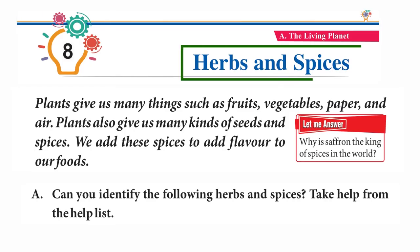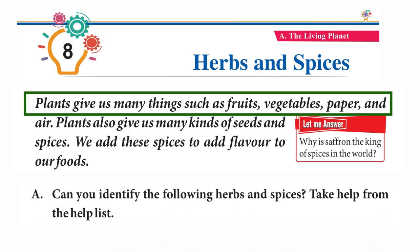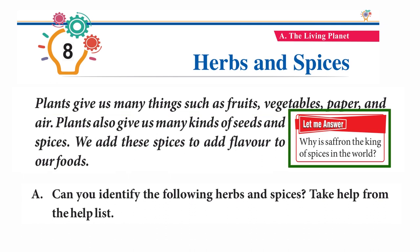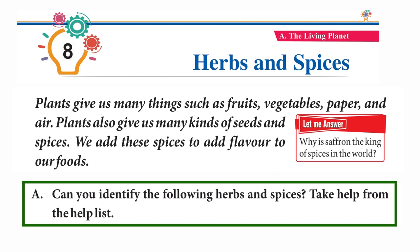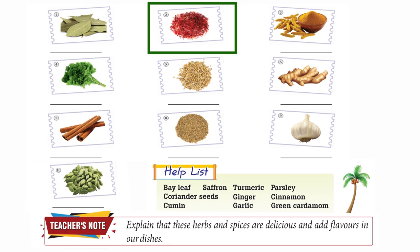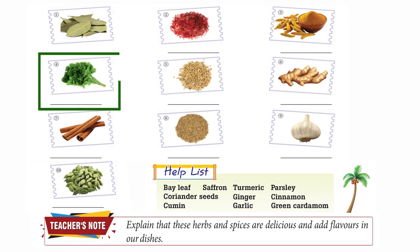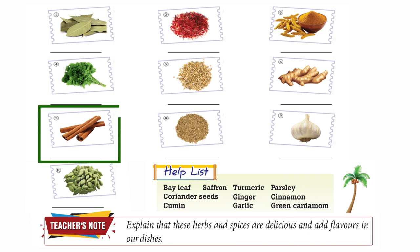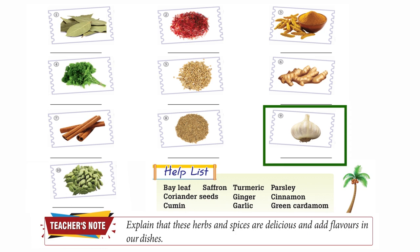Chapter 8: Herbs and Spices. Plants give us many things such as fruits, vegetables, paper, and air. Plants also give us many kinds of seeds and spices. We add these spices to add flavour to our foods. Can you identify the following herbs and spices? Bay leaf, Saffron, Turmeric, Parsley, Coriander seeds, Ginger, Cinnamon, Cumin, Garlic, Green cardamom.